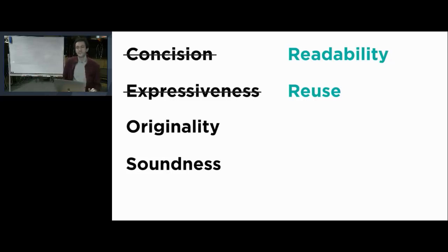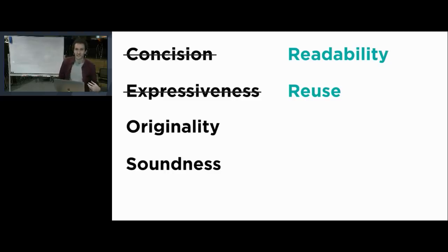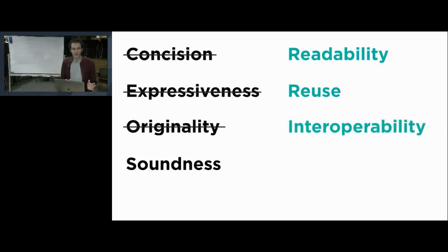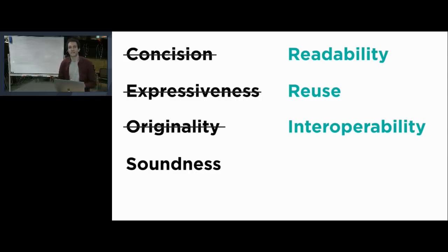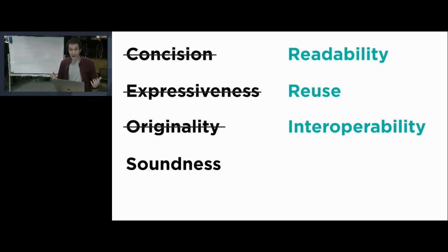Another misconception is that what's good about a language is originality — we tend to boast about having invented something — but this is not a goal for Kotlin at all. What we actually care about is quite the opposite: interoperability. We don't want to stand out; we want to blend in as much as we can. This is a broader sense of reuse — we want to enable reuse of existing ecosystems and leverage as much of existing knowledge and code as is out there.